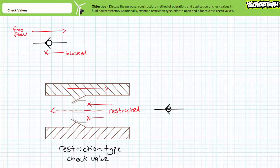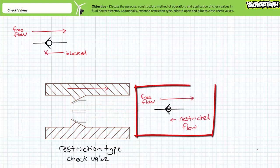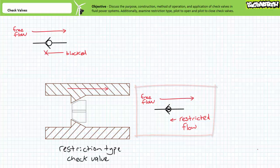Given a smaller orifice, only a smaller quantity of fluid can negotiate the narrow path in the same time. Both flow rate and actuator speed are therefore reduced when the restriction type check valve conducts metered flow in the restricted direction. The schematic symbol for a restriction type check valve shows a regular check valve with a fixed restriction drilled through the center of the ball.